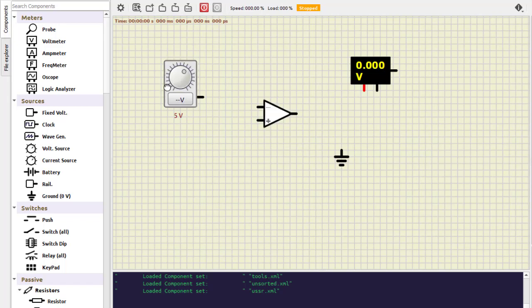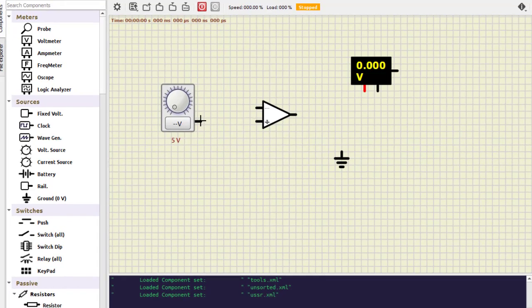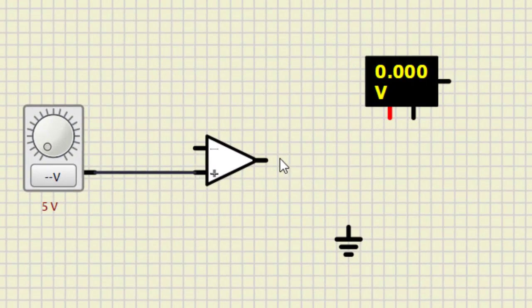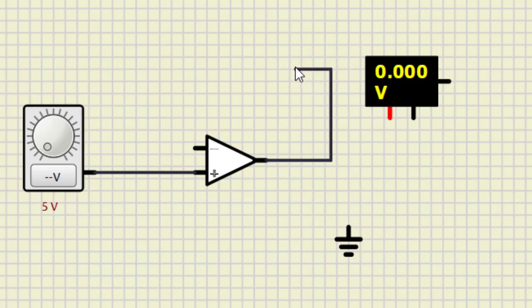So now let us connect the input. So this is the input. Then this is again returned back to the as a negative feedback.